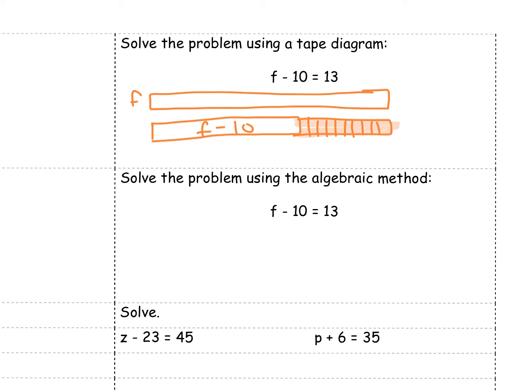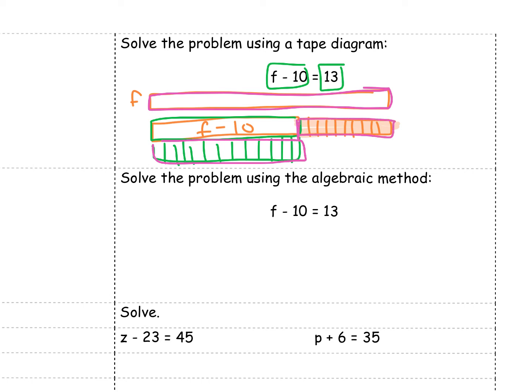And our problem is saying that f minus 10, so this box that's remaining, is 13 units. So I can make the same length, 13. I have 13 boxes there. And I need to figure out what was the original box f like. So how long was it? So it was all of these 13 and all of these 10. So I had 13 here, 10 here, 13 and 10. f was originally 23 boxes long.